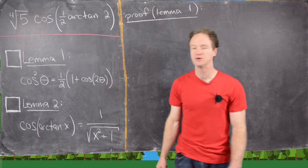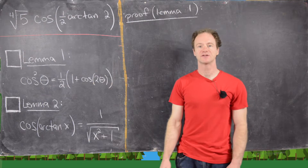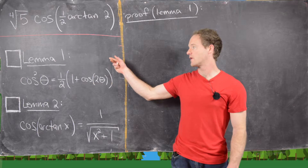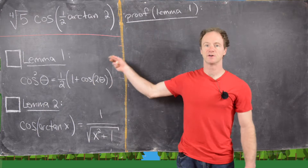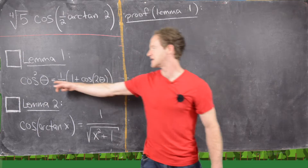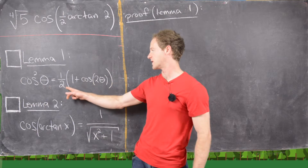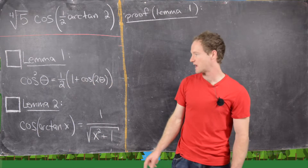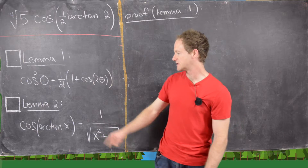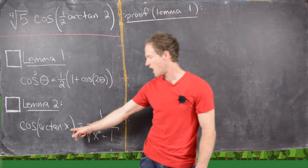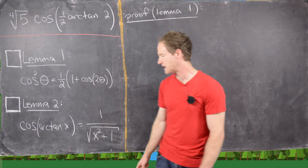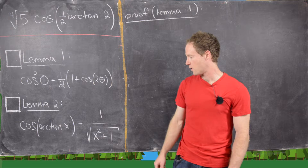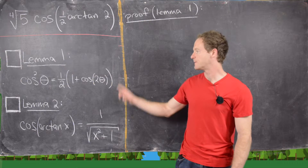We'll use the following two nice results in order to get this. We'll call them Lemma 1 and Lemma 2. Lemma 1 says that cosine squared θ equals one-half times (1 + cosine 2θ). Lemma 2 says that cosine of the inverse tangent of x is one over the square root of x squared plus one.